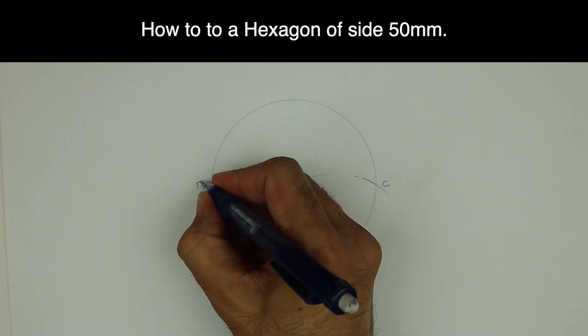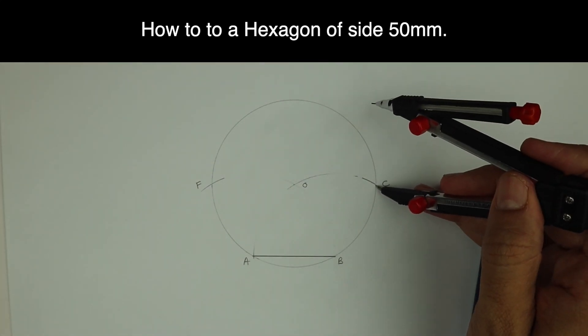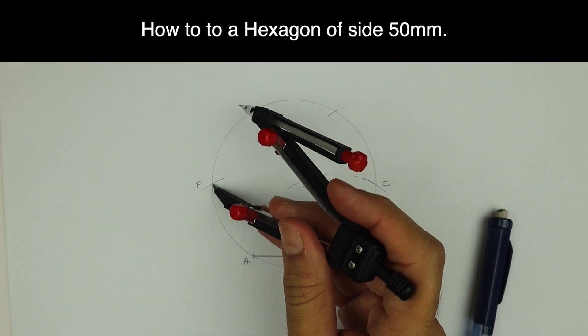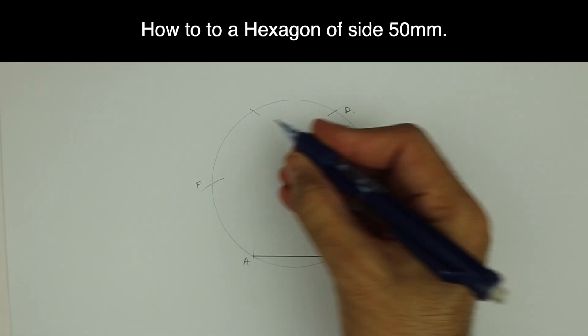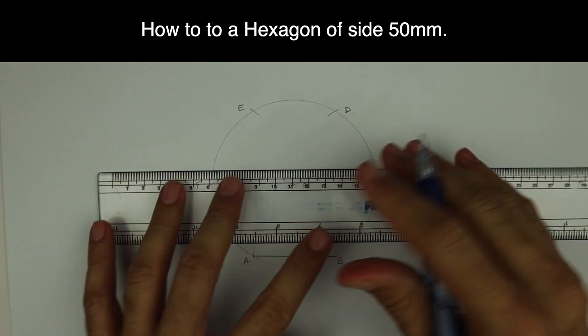Now again from C, same radius, you cut on the upper side. You'll get D and E respectively. So this is D, this is E. Now we join all these points.